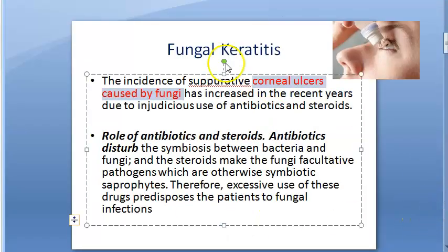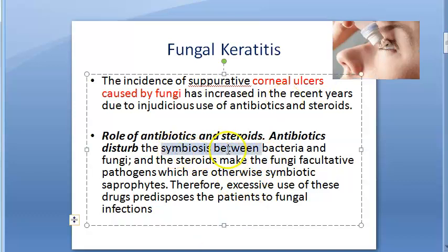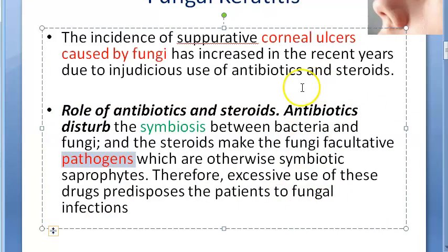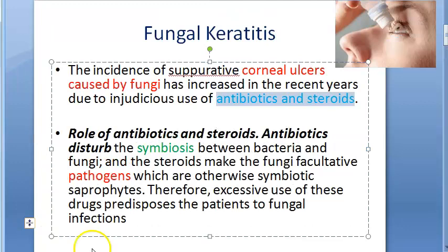The definition is simply a corneal ulcer caused by fungi. The incidence has increased a lot because people are abusing antibiotics and steroids. Antibiotics disturb the symbiosis between bacteria and fungi, while steroids cause immunosuppression. This turns fungi from symbiotic saprophytes into facultative pathogens. So what was once symbiosis now becomes a pathogenic infection.